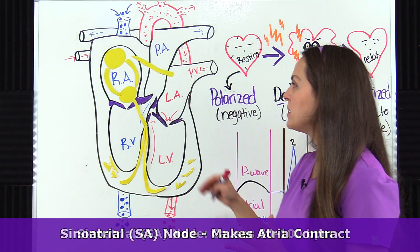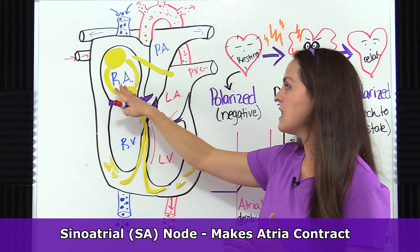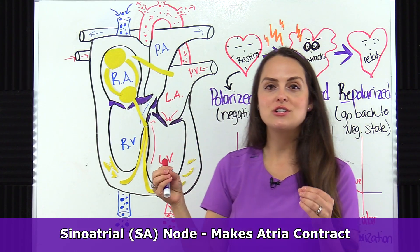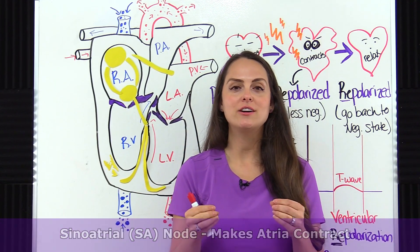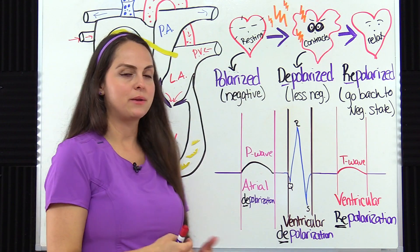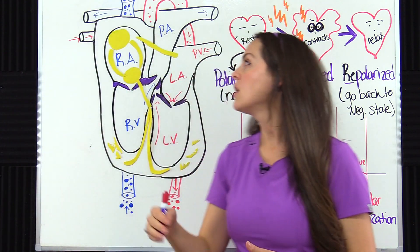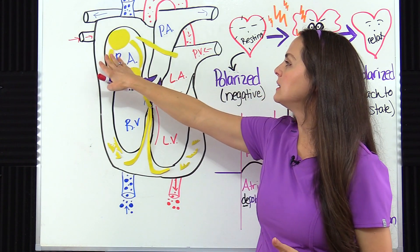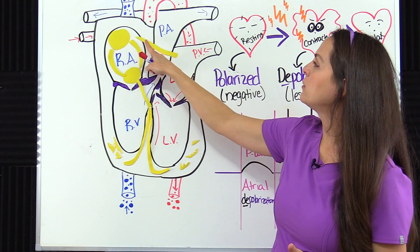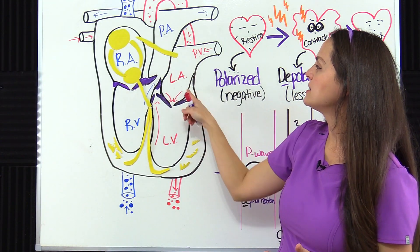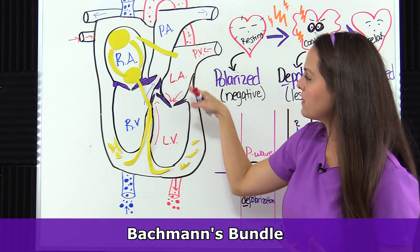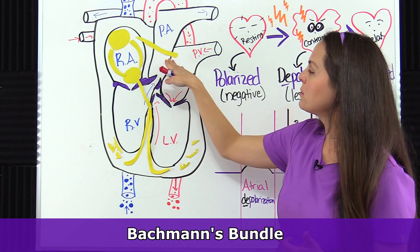The SA node is responsible for making the atria contract. So when it fires, it causes atrial depolarization. Whenever the electrical signals leave here, it goes through these internodal pathways. Over here we have a pathway so it can actually get over to the left atrium — because it's a little bit over there — called Bachmann's bundle.